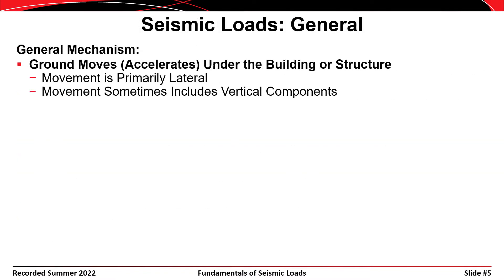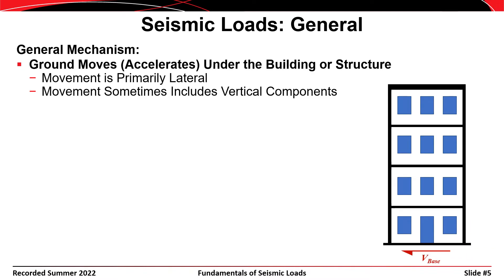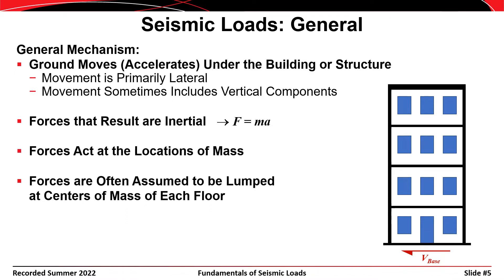The general mechanism that gets us from an earthquake event to seismic loads on our structure begins when the ground moves or accelerates under a building. The movement is primarily lateral but sometimes includes vertical components. A lateral movement induces a base acceleration underneath the structure, which manifests as a base shear V sub B. The resulting forces in the structure are inertial in nature — F equals MA. Because mass is typically located in or on the floor slabs, we say that forces are lumped at the centers of mass at each floor level and distributed vertically.